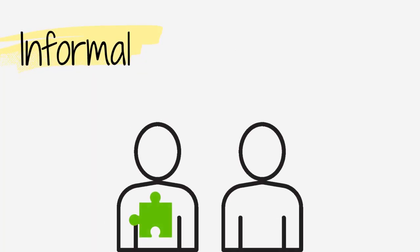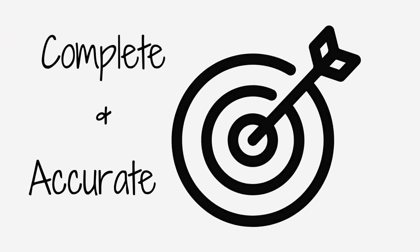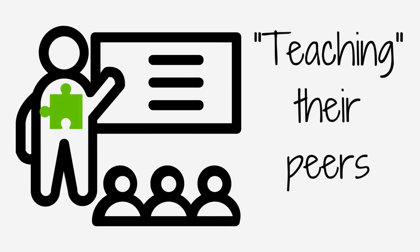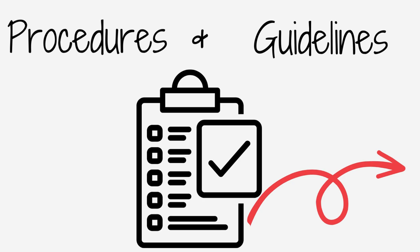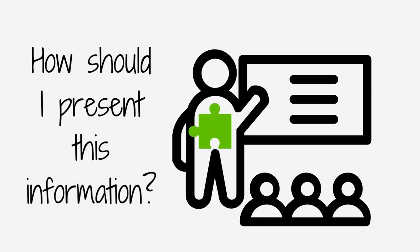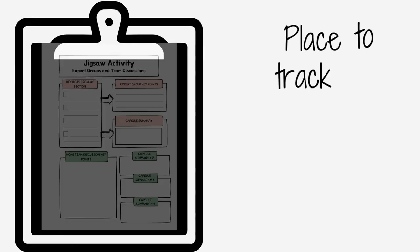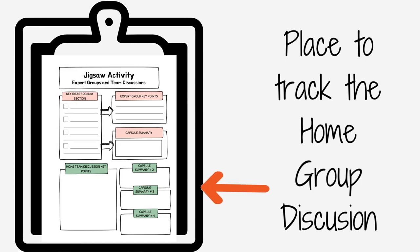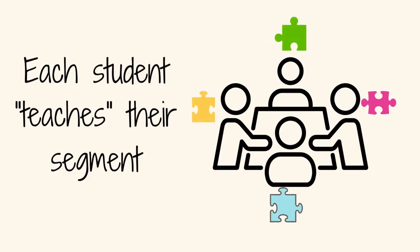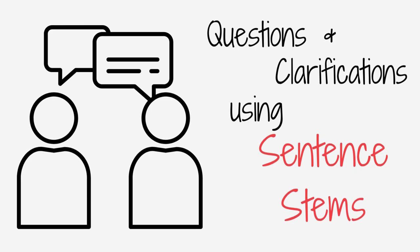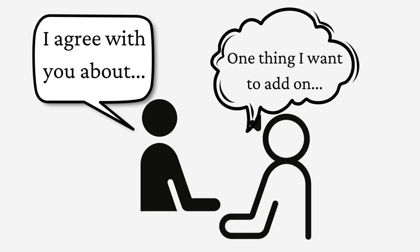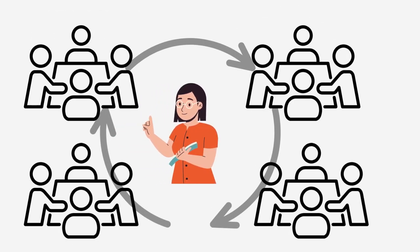Remind students that these presentations are informal, but need to be complete and accurate as they are teaching their peers their segment. Finally, bring the students back into their home group. At this point in the process, discuss the procedures and guidelines as each expert reports the information they learned and gathered. The teacher will also need to have prepared a way to summarize each home group's ideas. Each student will present his or her segment to their group. Remind students that they are responsible to learn all content, each piece of the puzzle, from one another. Encourage others in the group to ask questions for clarification by providing those sentence stems. The teacher should float from group to group, observing their presentations and discussions.